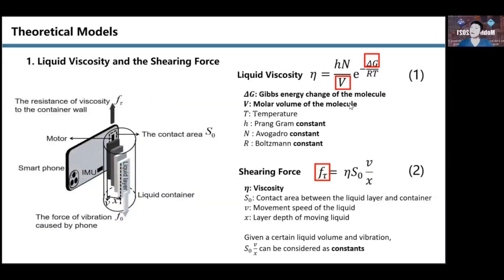Now I introduce the proposed theoretical model for liquid viscosity measurement. Liquid viscosity is a kind of shearing force, and its formula is shown on the right side. Eliminating the other constants and parameters we can control, like volume and temperature, we can find that the exponential term, delta G, is a variable. The molecule will influence this variable, which means the liquid's composition will induce significant influence.